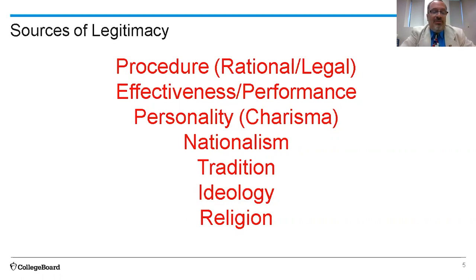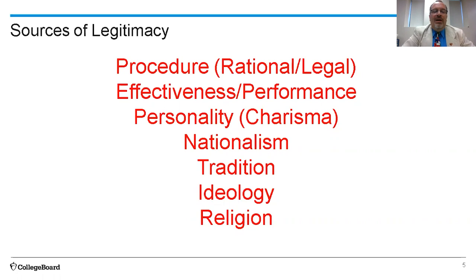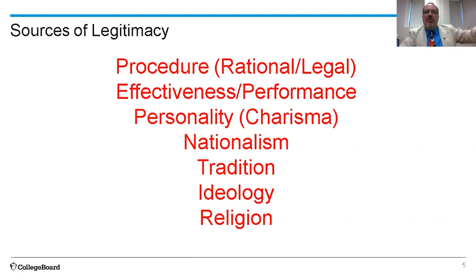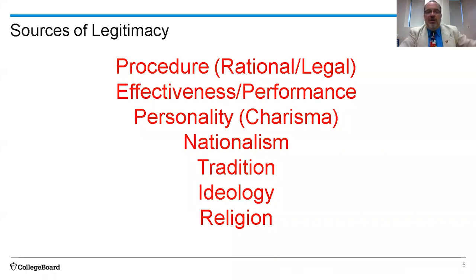There are a variety of different organizations of sources of legitimacy. This is one that I like — there are others available depending on what text you use. The first on this list is procedural, what Max Weber would have called rational or legal. Basically, it means that we grant to decision makers the right to rule because of a procedure — typically elections — that we accept as legitimate. You won the election fair and square. Maybe I didn't vote for you, but because you won the election fair and square, you can make decisions on my behalf. So that's procedural legitimacy.